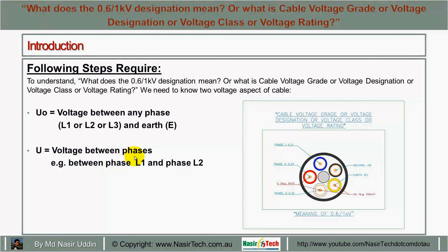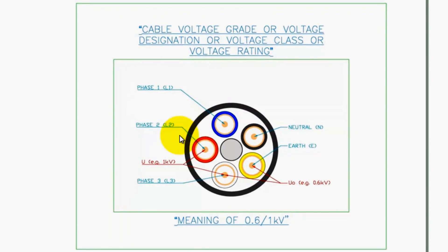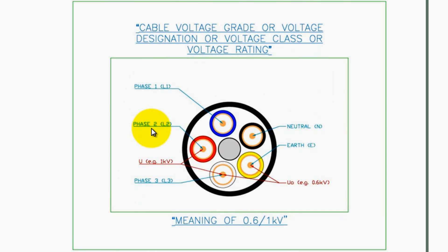Now, U means the voltage between phases — that is phase 1 and phase 2 voltage difference, or phase 2 and phase 3 voltage difference, or phase 1 and phase 3 voltage difference.